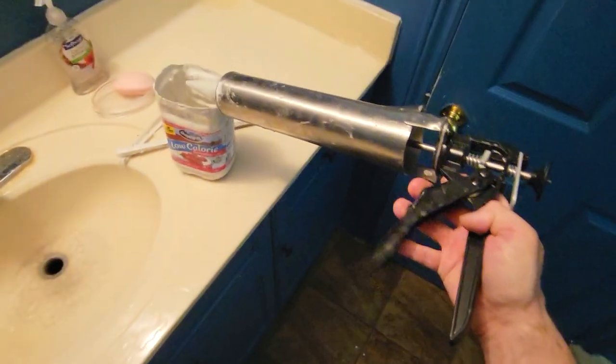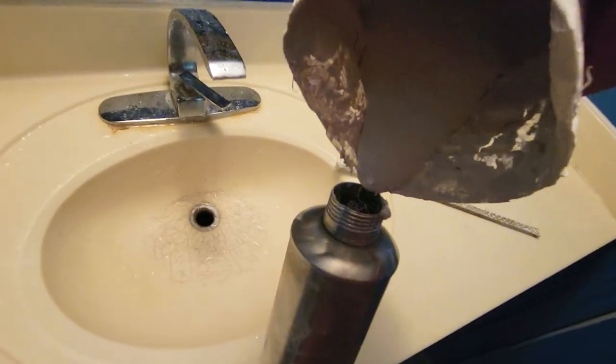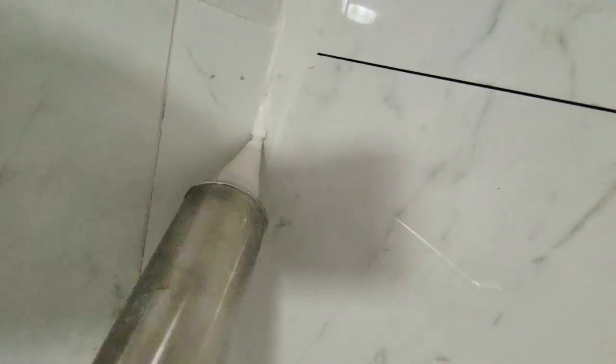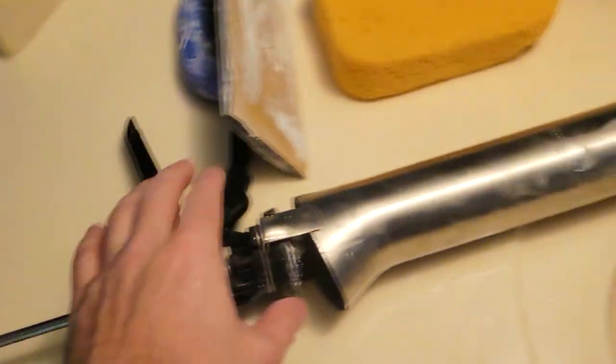What's good everybody, in this video we're gonna show you if this little gun is worth it. This is a cement, thinset, or grout gun. Inside it works like a regular caulking gun. We have filled this with some grout and it's supposed to make our life easier, so stay tuned for the whole video.